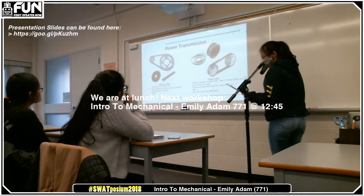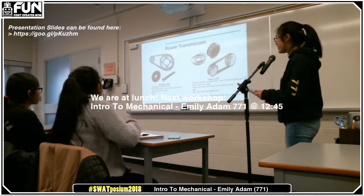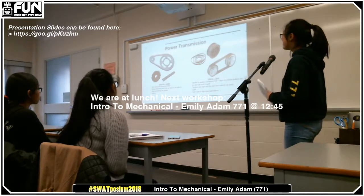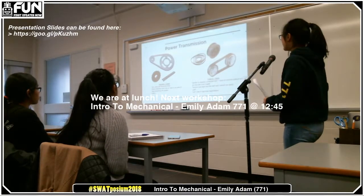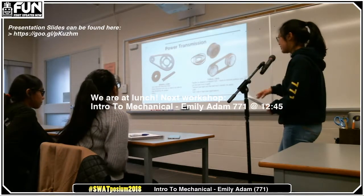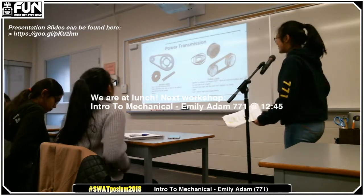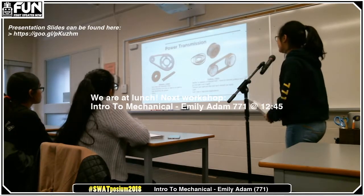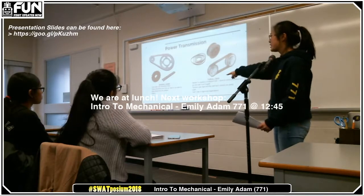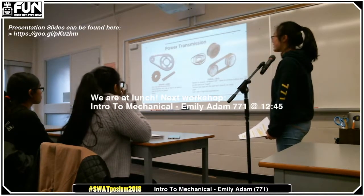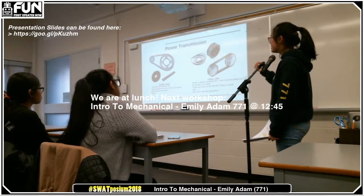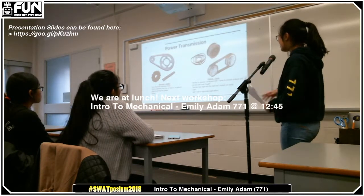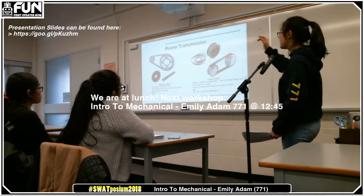Power transmission is the transfer of energy from where it's generated — the motor — to the place of work — the mechanism. There are two methods of power transmission: sprockets and chain, and pulleys and belts. At low-load applications, when your mechanism is not super heavy or large, you can use either. As you move to higher loads you want to use sprockets and chain, and at very high loads you either increase the chain strength or move to just two gears spinning each other.